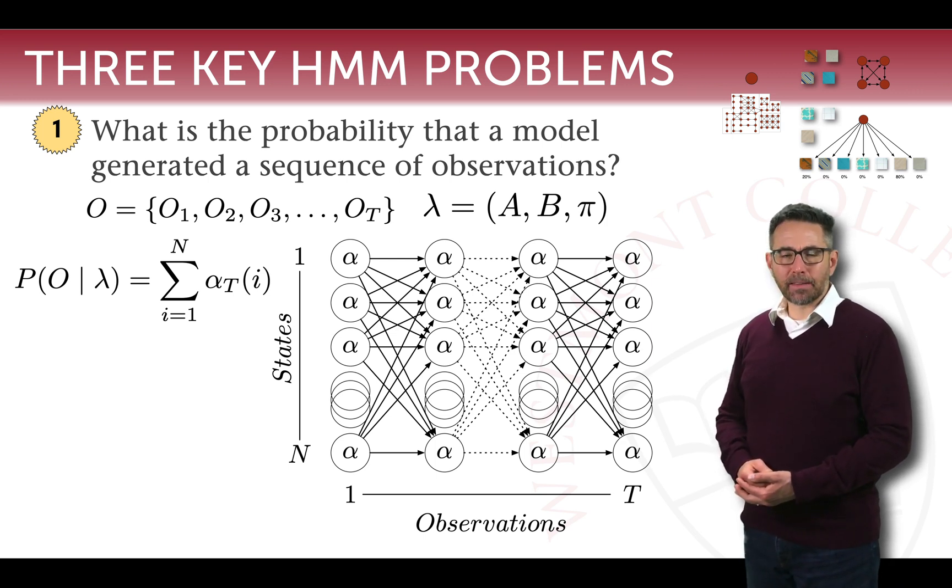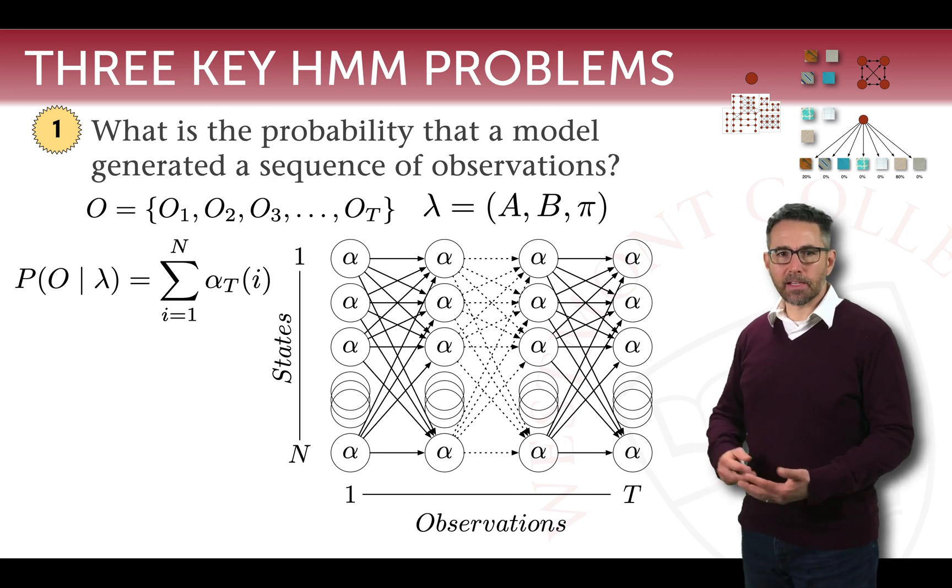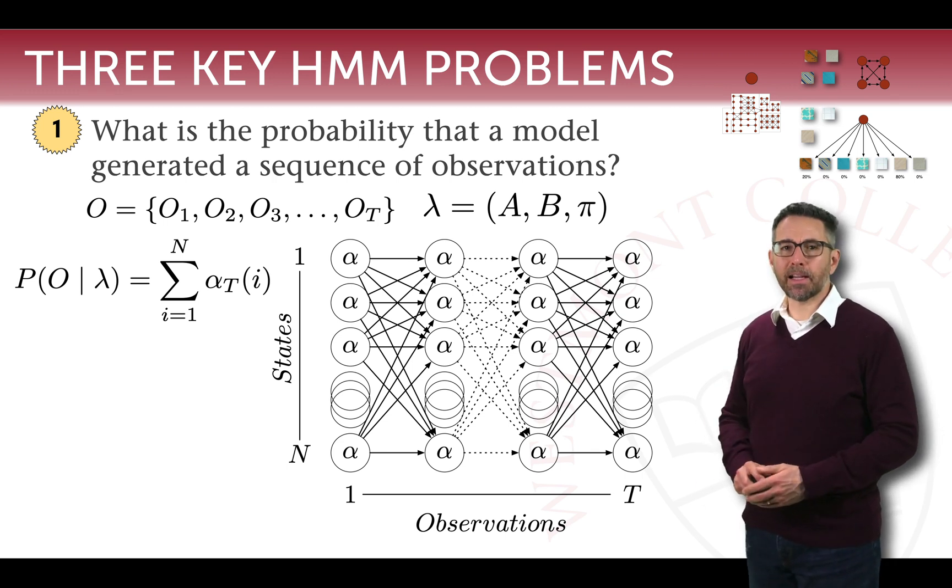Our alphas formed a lattice that moved from left to right as we went from observation one up to observation T. It formed a representation of the probability of being in a given state regardless of how you got there. By calculating them recursively or inductively, we were able to efficiently figure out the probability of an observation sequence irrespective of what state sequence generated it.